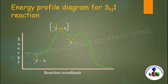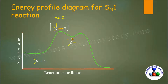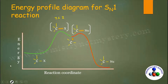In the first step of the reaction, the highest peak represents the transition state, because transition states always have the highest energy. The valley between the peaks is the product of the first step, acting as reactant for the second step. The second peak represents transition state 2, and the final point is your product.